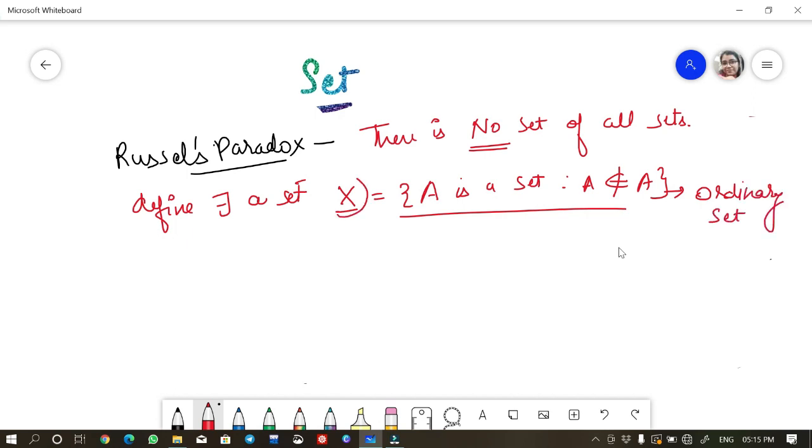If I say there is no set of all sets, what is this set X itself? Can you tell me? Because I have considered this X to be the set of all ordinary set, but this X itself is a set. So is this ordinary or is it extraordinary?